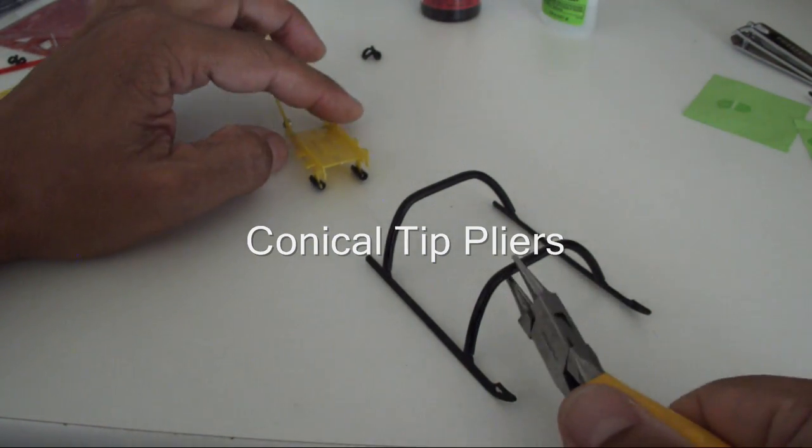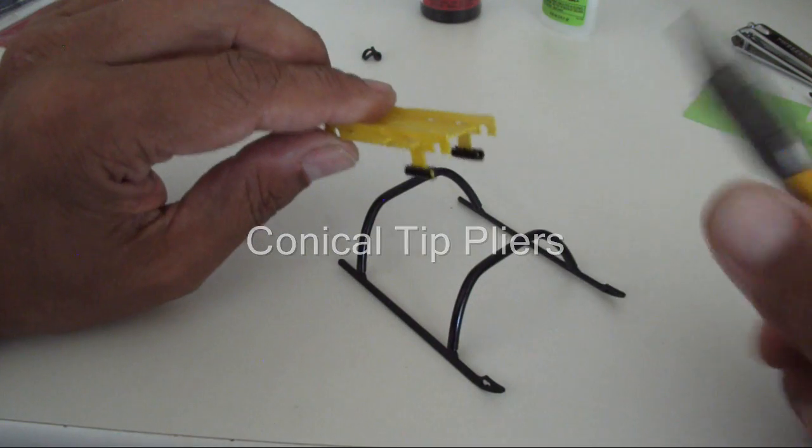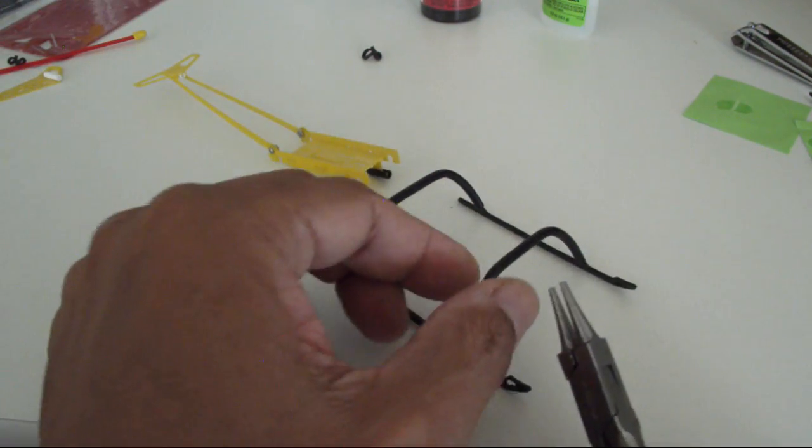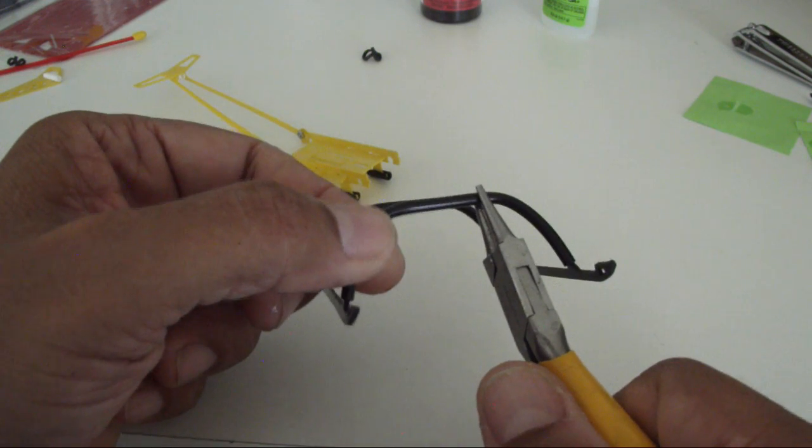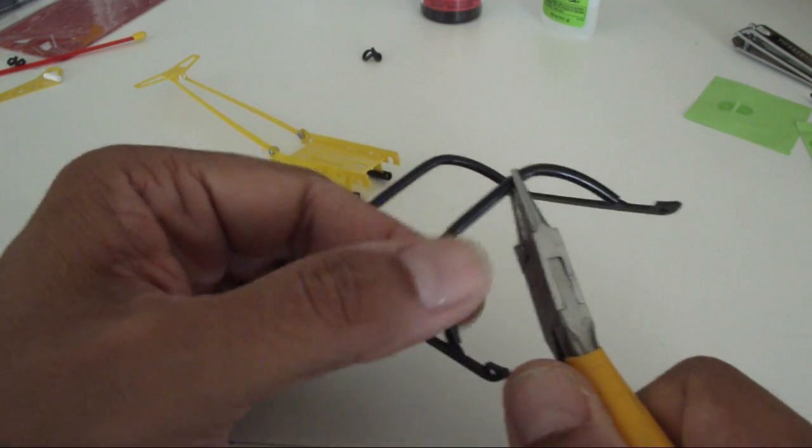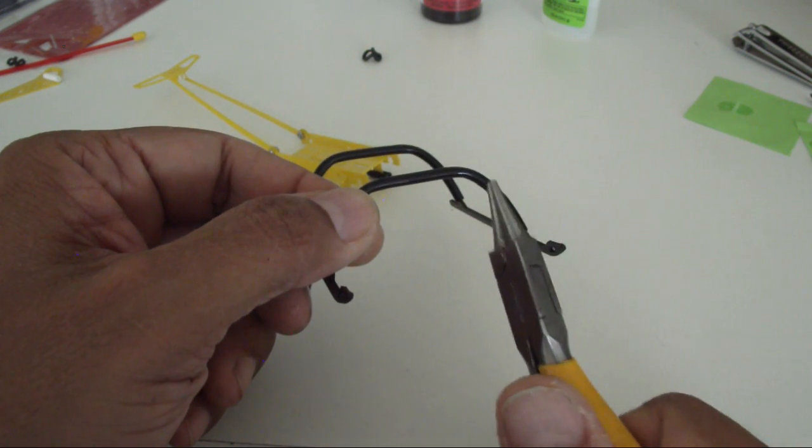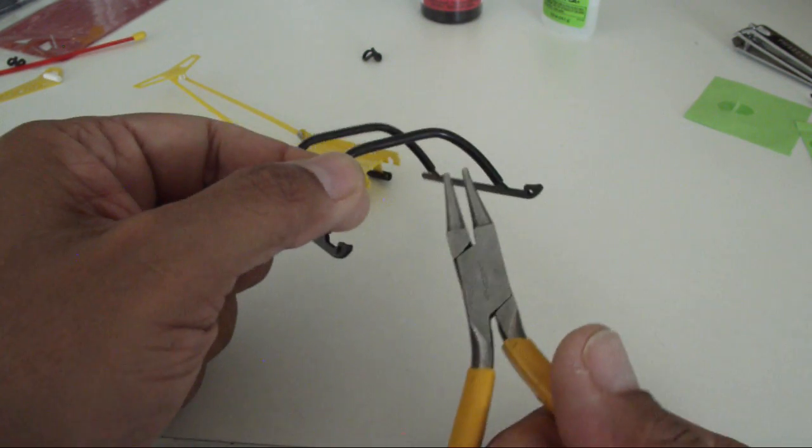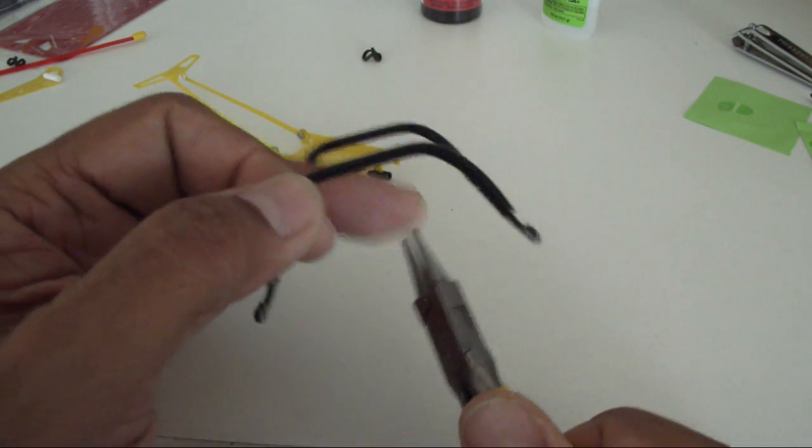The installation of the landing gear struts to the landing gear support is in very similar ways to the way we've done our other MIA Tough landing gear kits. Basically, you're going to need a conical or small pliers such as this one.